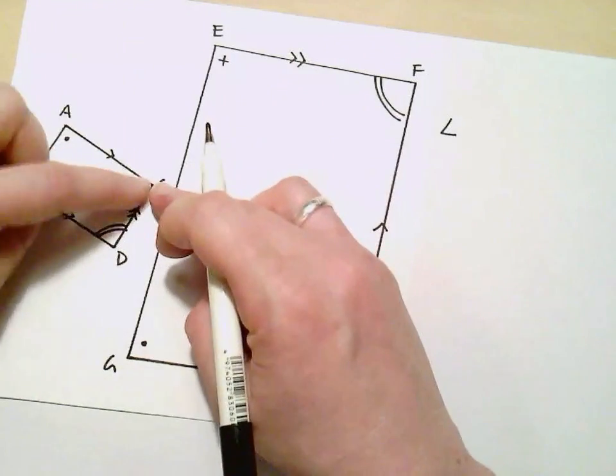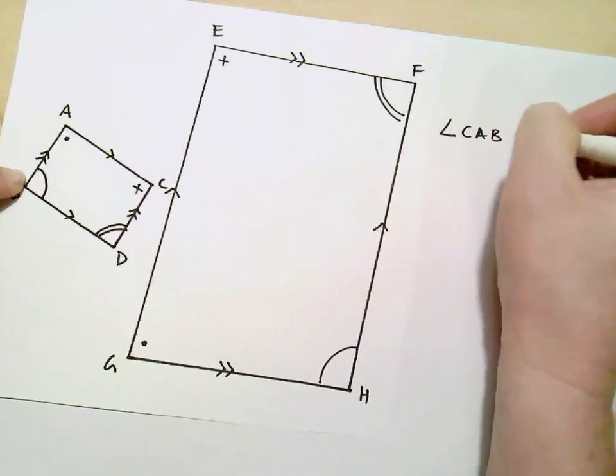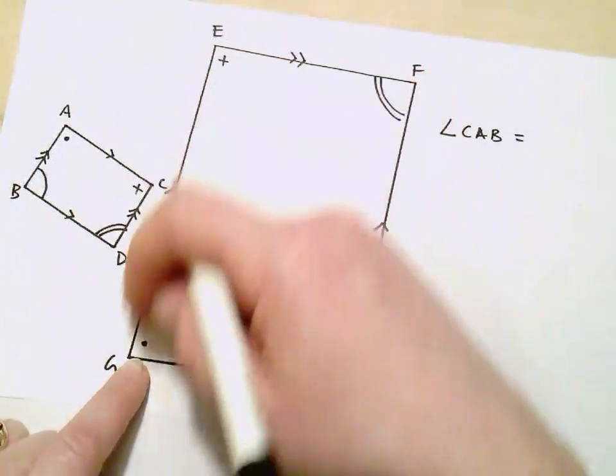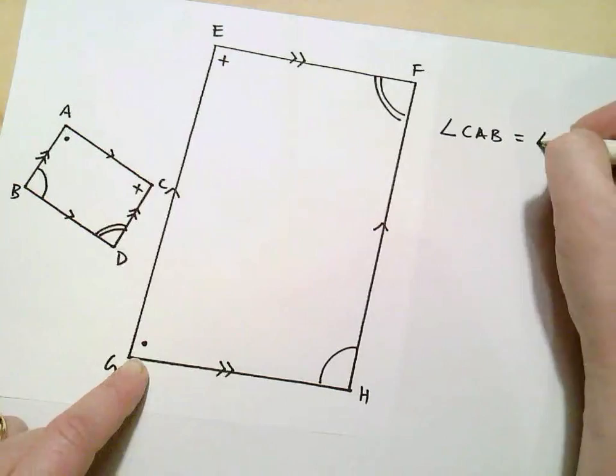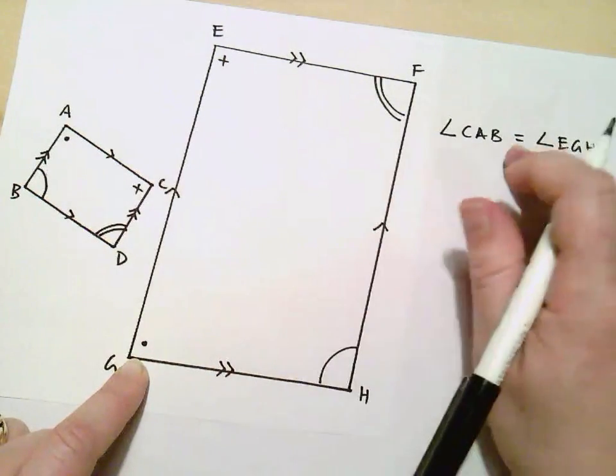This would be angle CAB. I can see that that is the same size as angle EGH. And I know that because they've both got the dot. So I can say that they're equal.